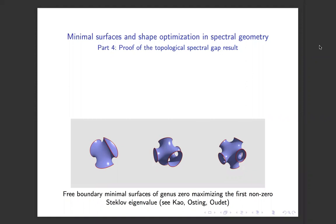In part 4, we aim at proving the topological spectral gap result. This result was necessary to prove the existence of free boundary minimal surfaces of any topological type in some Euclidean ball by maximization of the first Steklov eigenvalue. These examples were computed numerically by Kao, Austin and Oudey, and we would like to perform the theoretical way to prove the existence of these surfaces.